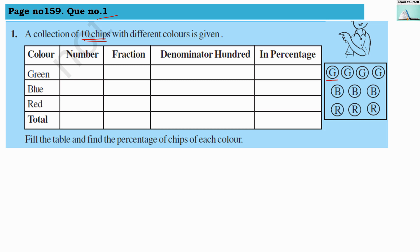There are four green color chips. Green chips: four. Blue chips: three. Red chips: three. Total is four plus three equals seven, seven plus three equals ten. So there are ten chips in total.